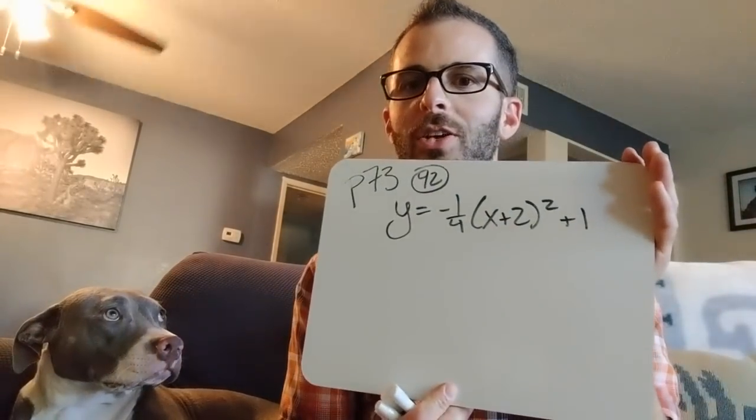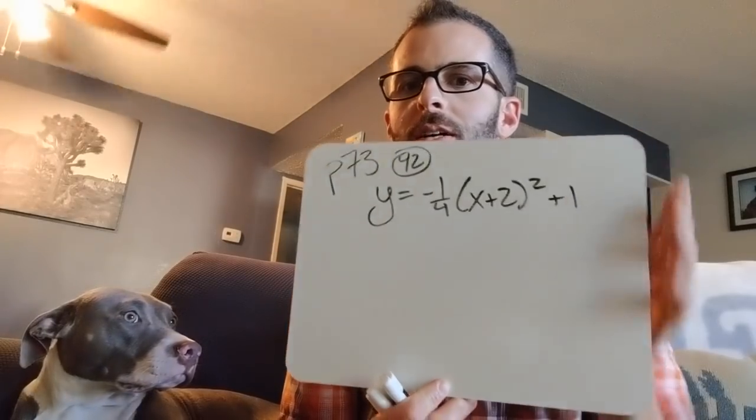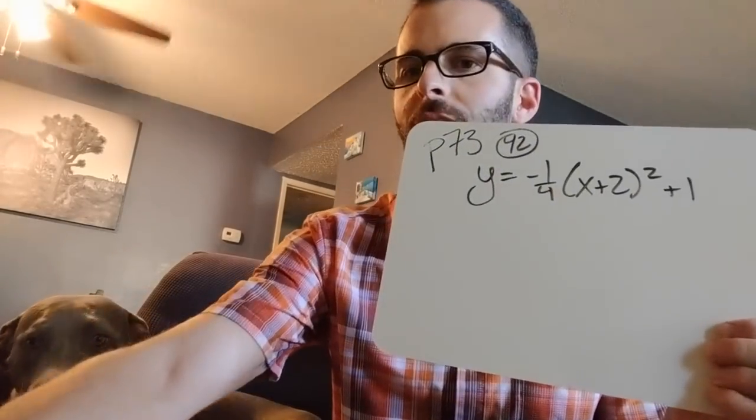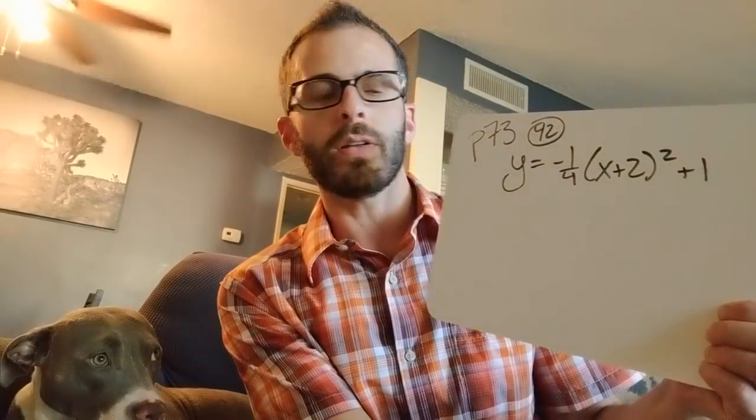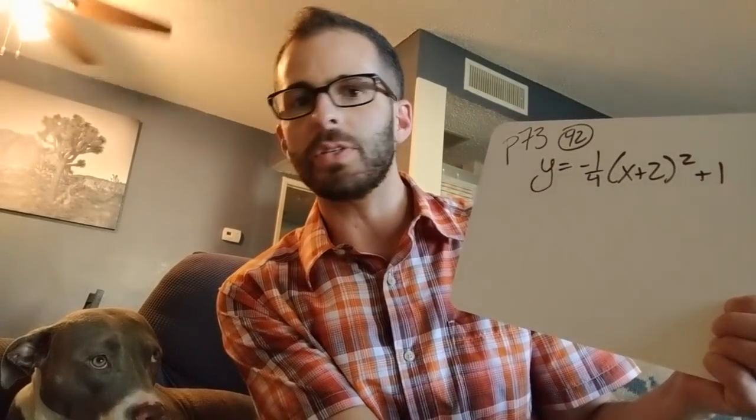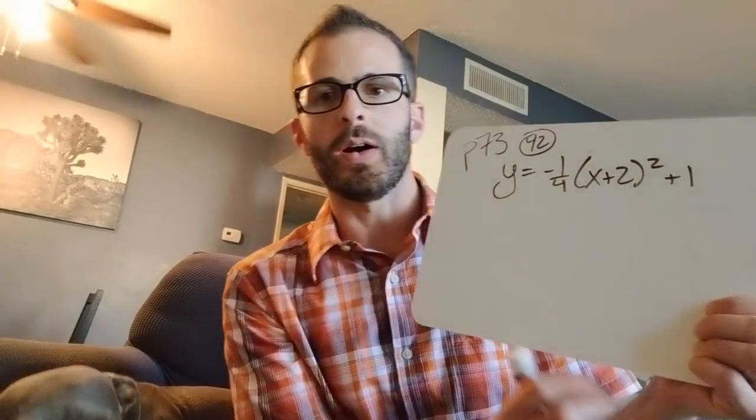All right, to help you out, August and I are going to do page 73, number 42, and the equation is y equals negative one-fourth times the quantity x plus two squared plus one. Sorry, August, I need more camera space.